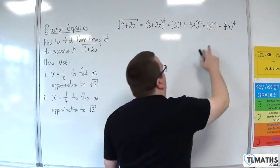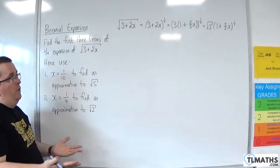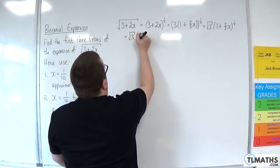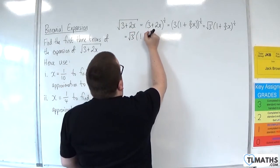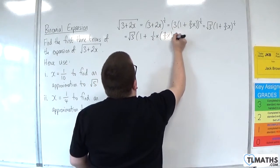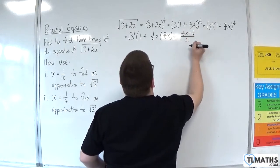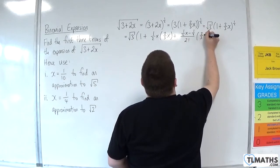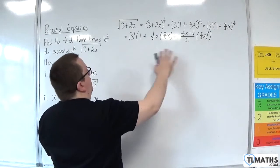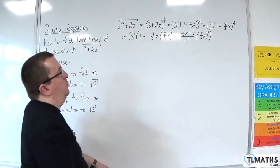Now I can use the binomial expansion formula on this part, which is in the formula booklet, and then multiply it through by root 3. So this is equal to root 3 times by 1 plus n times x plus n times n minus 1 over 2 factorial times 2 thirds x squared. Because I'm just writing down the first three terms, this is approximately equal to.